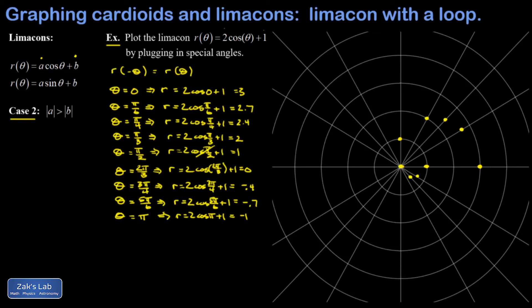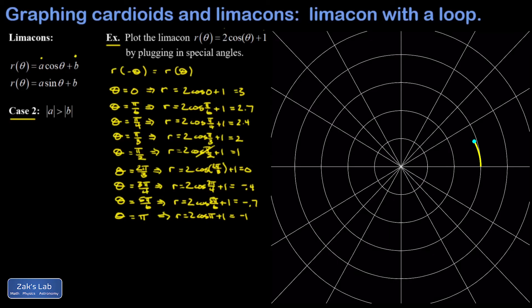All right, half of the points on our limaçon are done, and now we can use the symmetry of the curve to finish it. Finally we'll bring in the animation to see what this looks like as the curve is swept out from θ = 0 to θ = 2π.